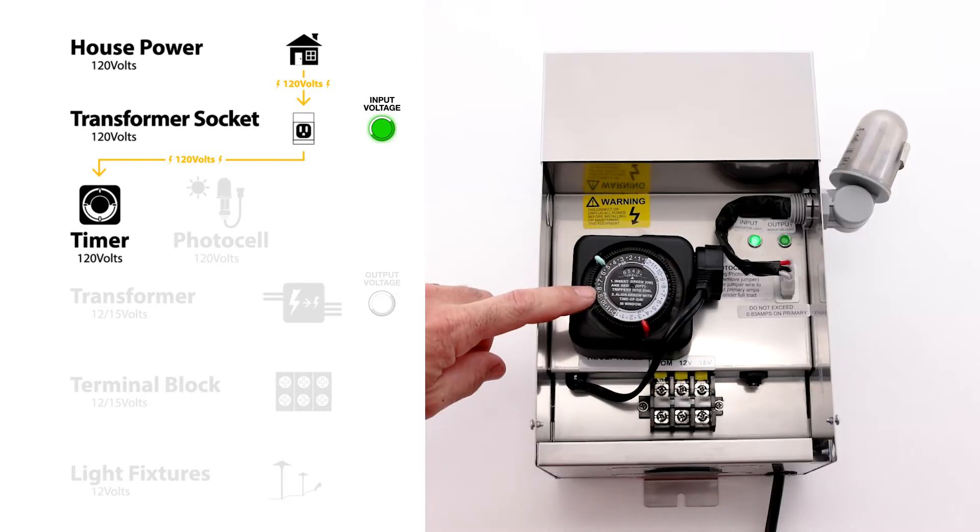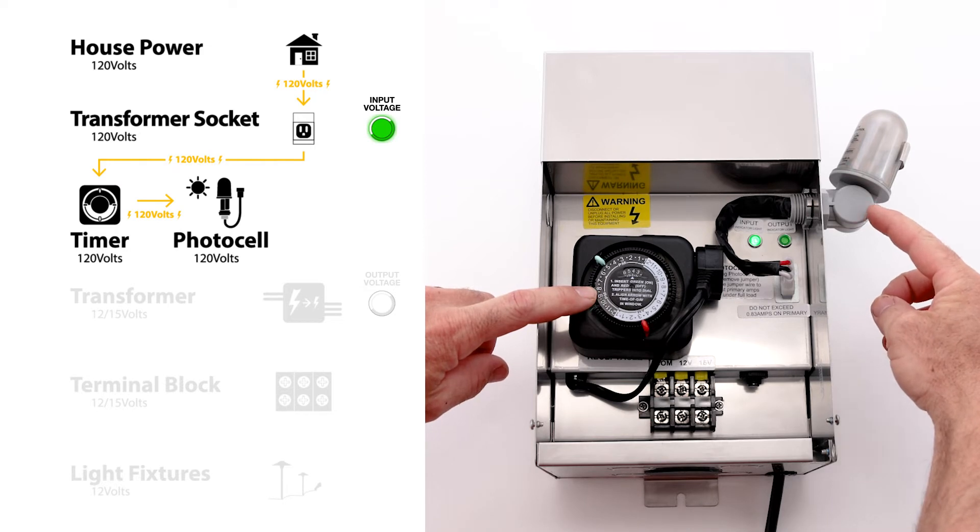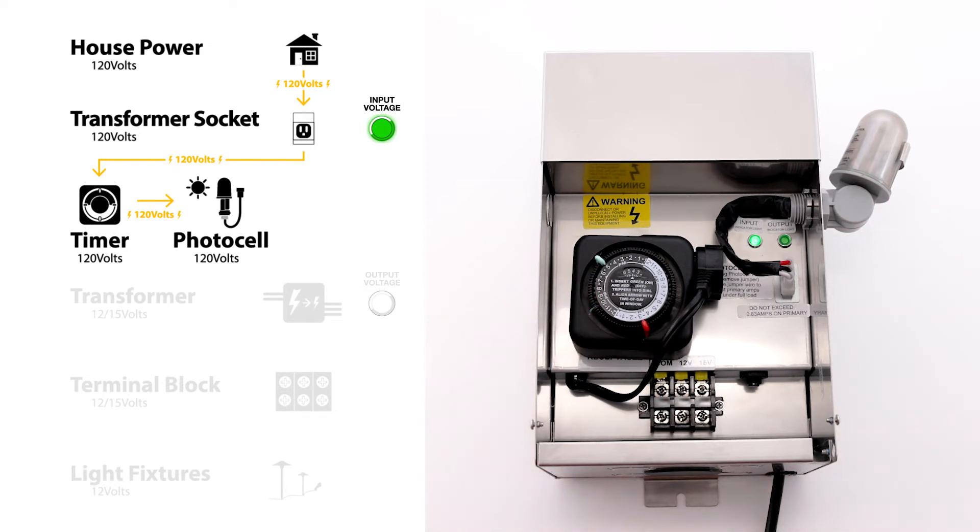The timer then sends power to the photocell at 5 p.m. But the photocell will wait until it's dark outside. This setup allows for you to set an early time to adjust for the time changes throughout the year and making sure the lights don't actually go on until it's dark. It's a great way to save energy.